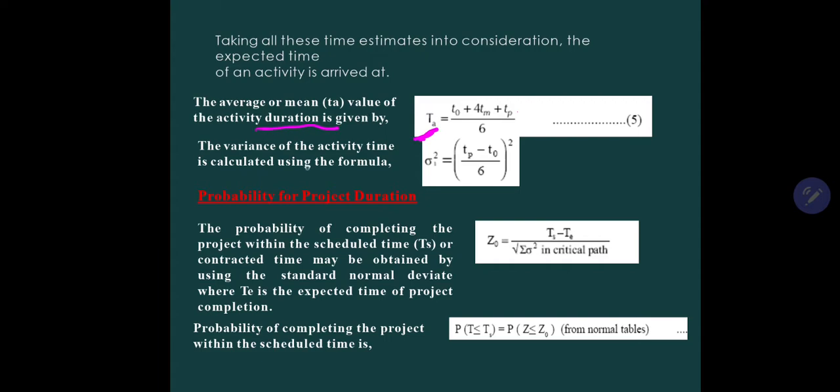The variance of an activity is given by the formula sigma square. Here the square is not down here, most students do this mistake. Sigma square is (TP minus T0) divided by 6, whole square. It is not sigma, it is sigma square. So for calculation of sigma, you have to take under root of ((TP minus T0) divided by 6) whole square. It is not the square of (TP minus T0), it is (TP minus T0) divided by 6 to the whole square.